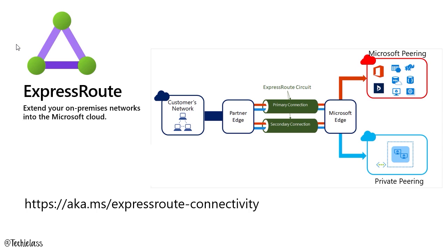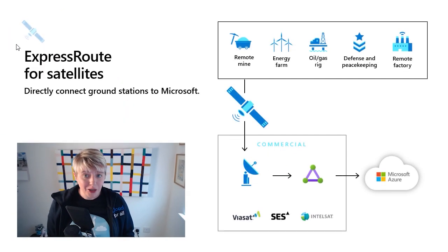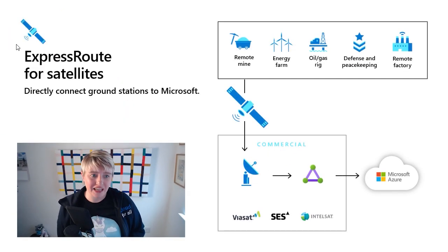With ExpressRoute, you have built-in redundancy at every peering location for higher reliability, and connection uptime SLAs are in place. Your bandwidth can range from 50 megabits to 10 gigabits — the price points change depending on what bandwidth you choose, but there is flexibility depending on what your organisation needs. If you need to know more about ExpressRoute, check out the link on screen for detailed information including pricing.